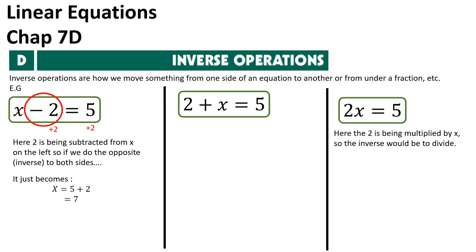So if I do that, it just becomes x on the left, because minus 2 plus 2 gives me 0, and then right becomes 5 plus 2, which is 7. So x equals 7 will be my answer. We could think of moving it to the other side by doing the inverse to that side.